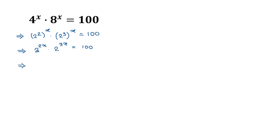By the law of exponents, we can write 2 to the power 2x plus 3x, which gives us 2 to the power 5x equals 100.